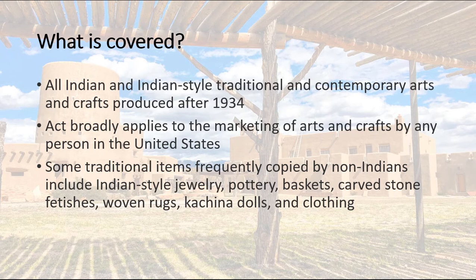So what is covered? All Indian and Indian-style traditional and contemporary arts and crafts produced after 1934. It broadly applies to the marketing of arts and crafts by any person in the United States if they are going to label it Indian. There is still a lot of copying and appropriation by non-Indians of Indian-style jewelry, pottery, baskets, carved stone fetishes, woven rugs, kachina dolls, and clothing — things that may say Indian on the label but were not produced by Indians. What it might actually be is Indian-inspired, which is a form of appropriation, but people still think it's made by Indians, particularly if they are uninformed about the Act or are new to the Indian arts market.